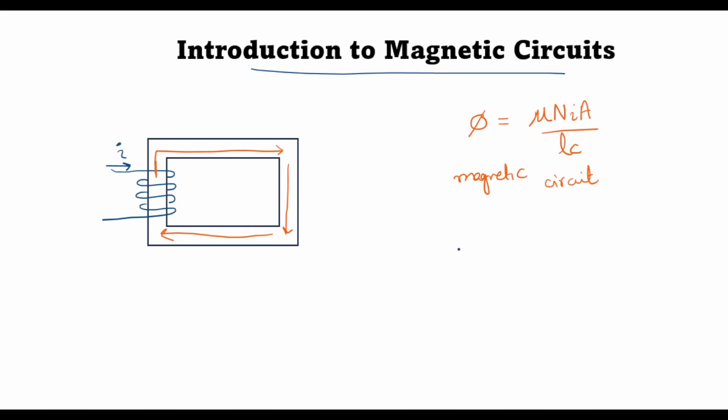This magnetic circuit is quite analogous to electrical circuits which we have been looking at in quite some detail in my lecture series on electrical circuits. You know from circuit theory that if I apply a voltage V across a resistance R, then this causes a current I to flow through this circuit and the relationship between voltage and current is governed by the famous Ohm's law which is V equals IR.